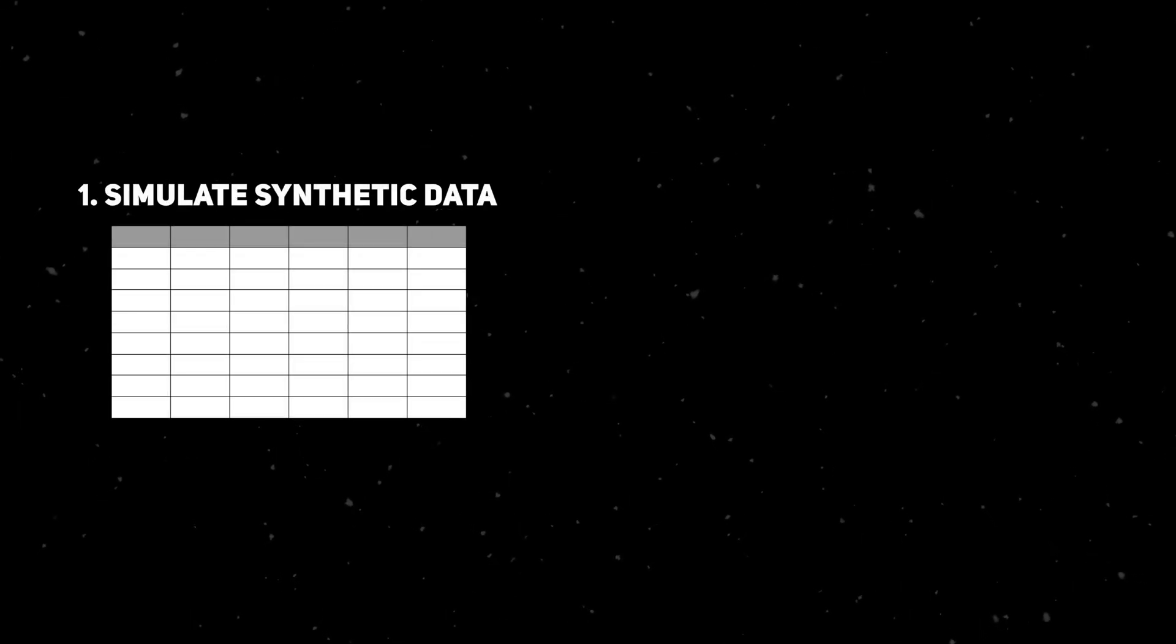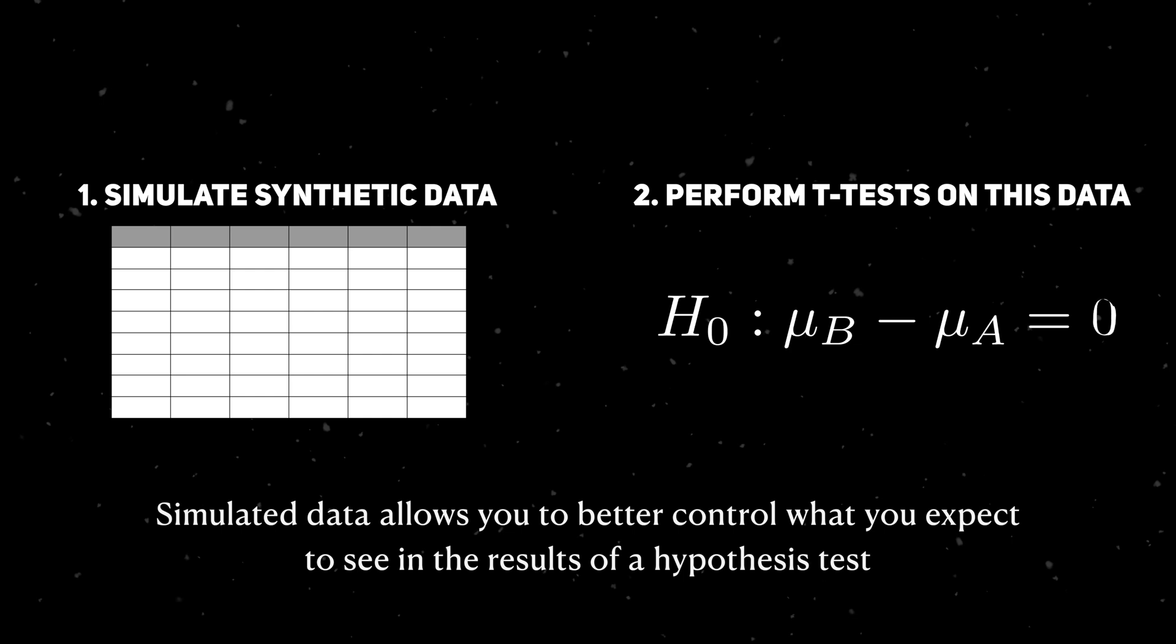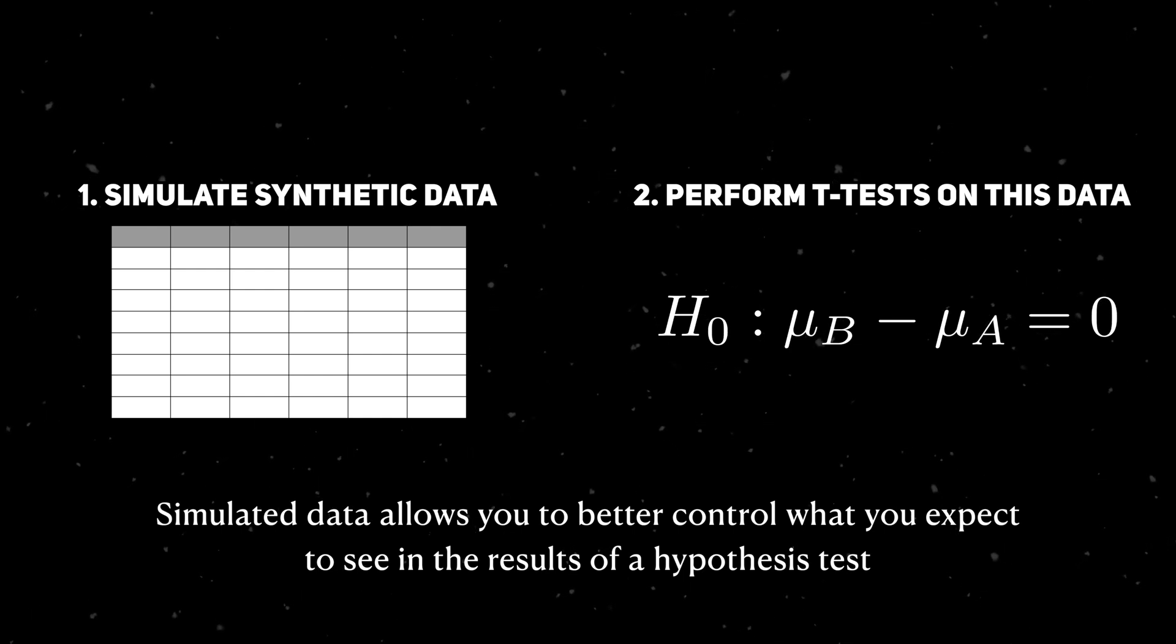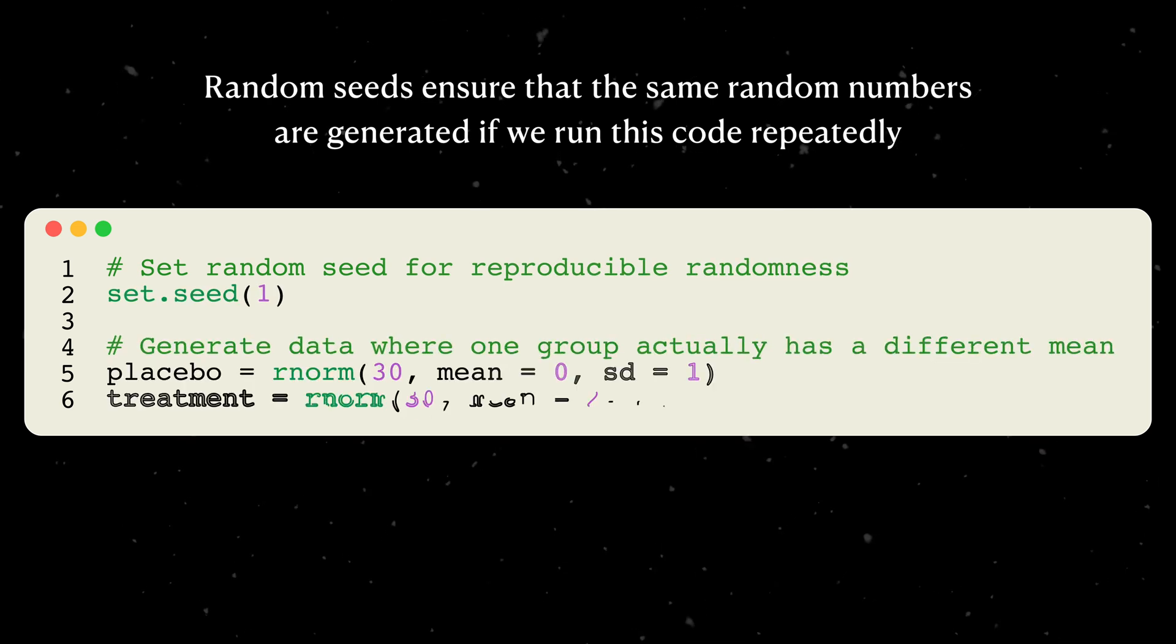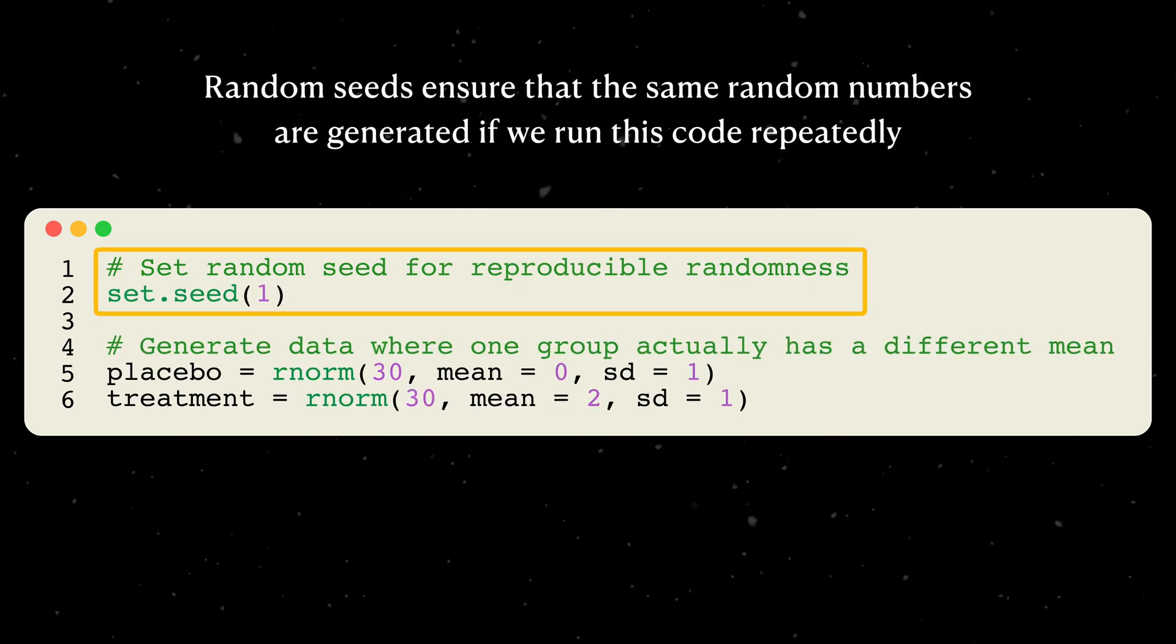For our code examples, I'll generate some synthetic data so that we can perform some t-tests on it. It may be synthetic data, but it helps me control the output of the test. I want my random number generation to be reproducible, so I'll first set a random seed.